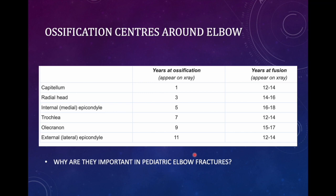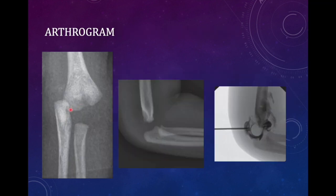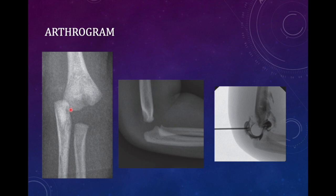The importance: suppose a neonate has a distal humerus fracture — none of these ossification centers are visible on radiograph, so clinically you detect the fracture but cannot assess displacement radiologically. To determine displacement, an arthrogram is performed: a radio-opaque dye is injected into the joint, then radiographs are taken. The dye takes the shape of the articular surface — which is formed by the epiphysis — making the cartilaginous structures visible. This allows identification of fractures like a lateral condyle or capitulum fracture not evident on plain radiographs.